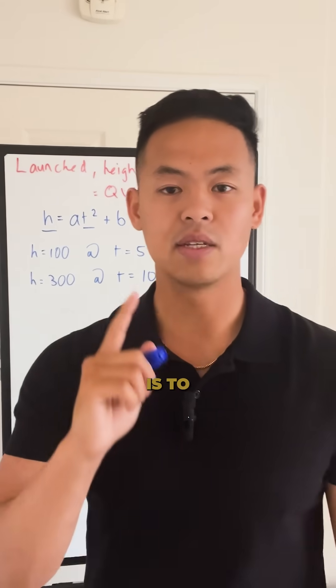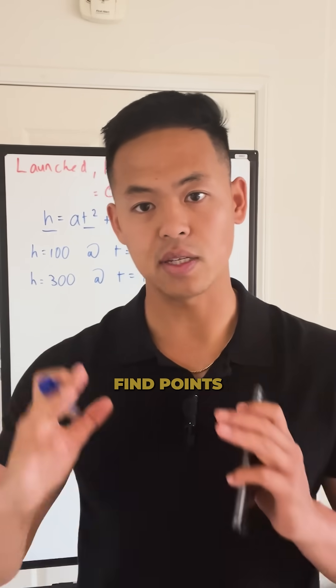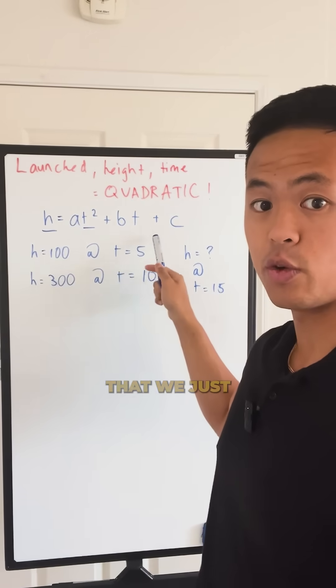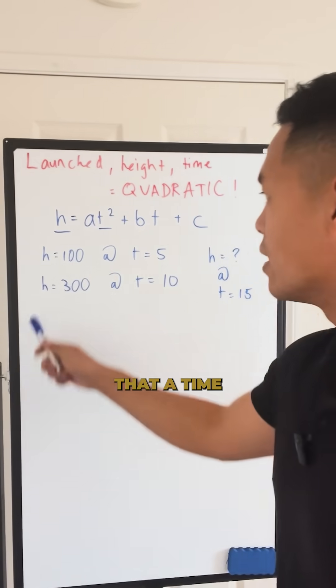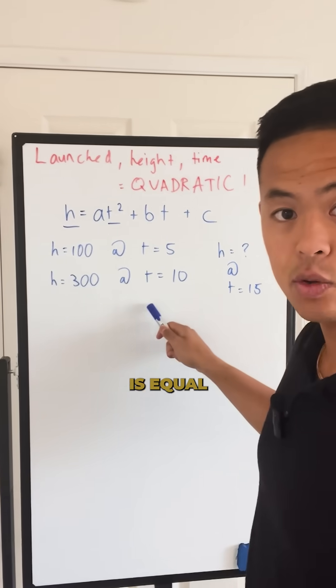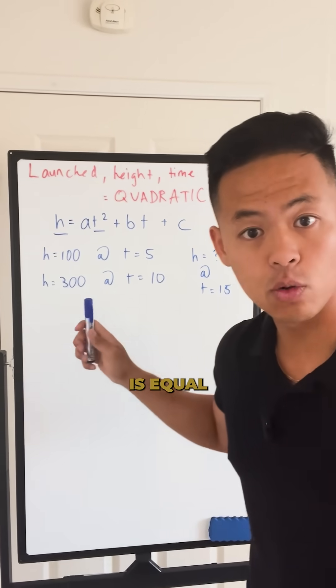The easiest way to do this problem is to find points in the problem statement and then plug them into the original equation. We know that at time equals 5, H equals 100, and when time equals 10, H equals 300.